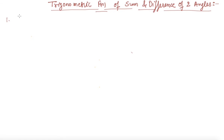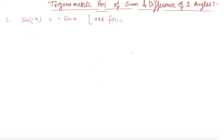The first formula is sin(-x) = -sin(x). This property states that sine is an odd function. What an odd function means is that if there is a negative sign inside, the sign comes out.